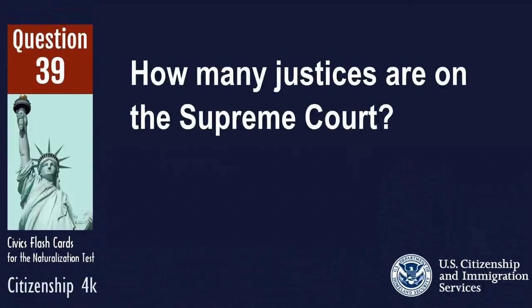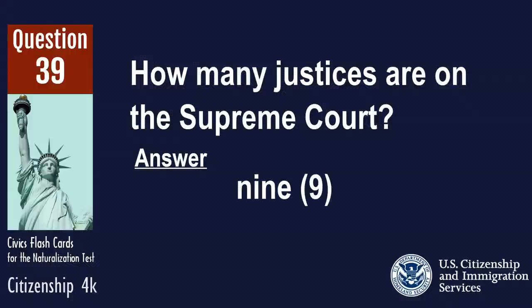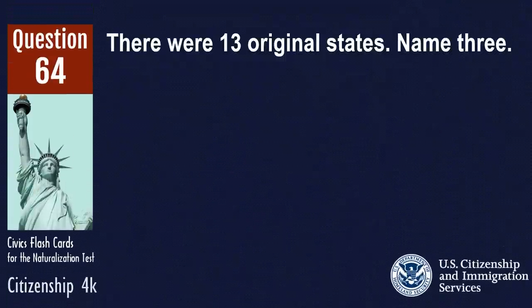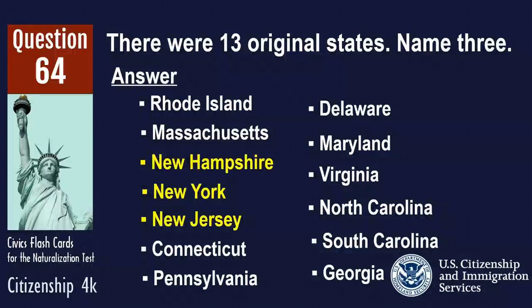How many justices are on the Supreme Court? Nine. There were 13 original states. Name three. New Hampshire, New York, New Jersey.